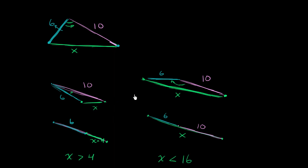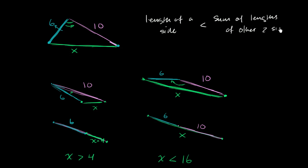The whole principle we're working on right here is called the triangle inequality theorem. It's a pretty basic idea that any one side of a triangle has to be less than the sum of the other two sides — length of a side has to be less than the sum of the lengths of the other two sides. Using this principle, x has to be less than 6 plus 10, so x has to be less than 16.